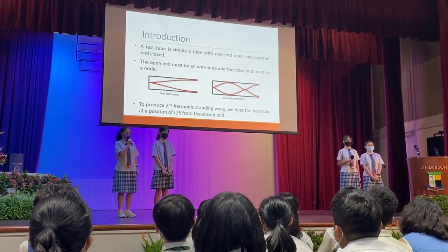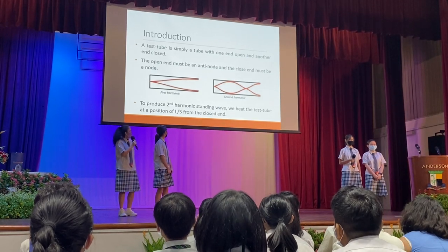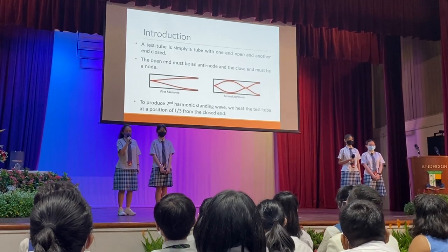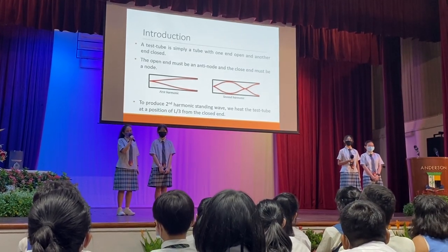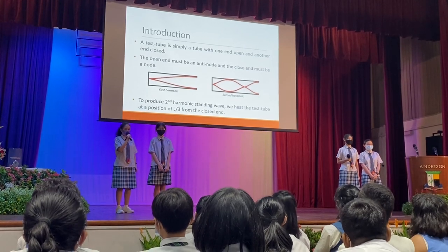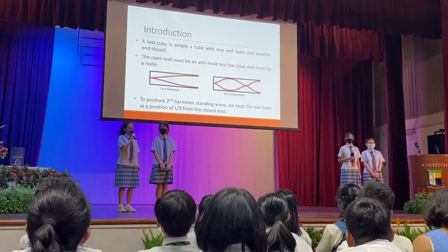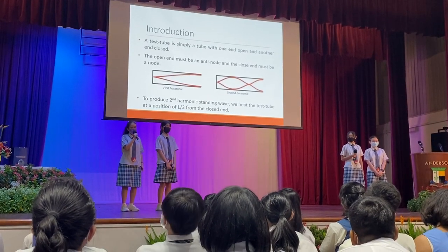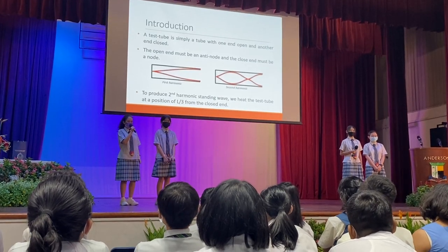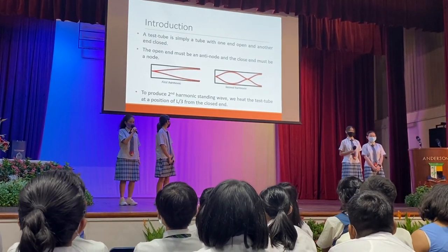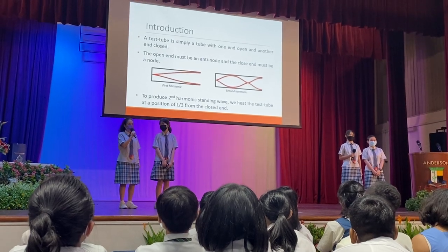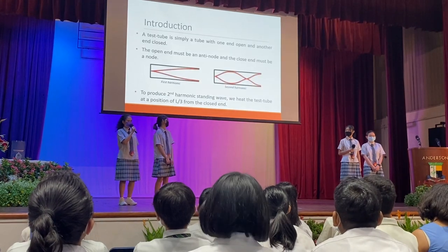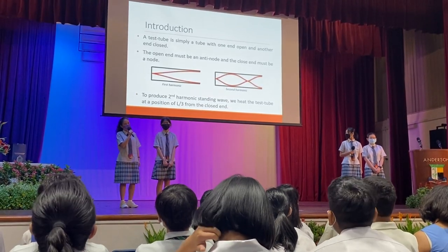And what is the possibility of using it to generate electricity? A test tube is simply a tube with one end open and one end closed. The open end must be an antinode and the closed end must be a node. From the theory on standing waves, for the second harmonic, if the test tube has the length of L, the first antinode is formed at the length of L over 3 from the closed end of the test tube.